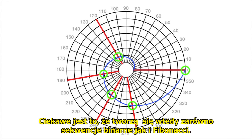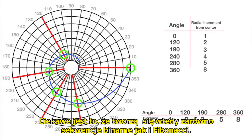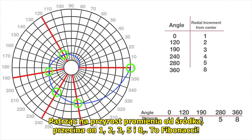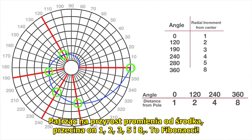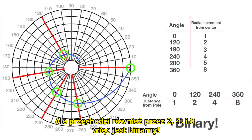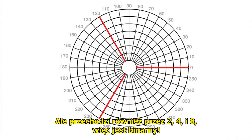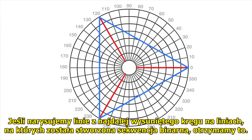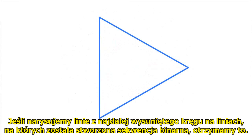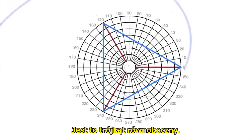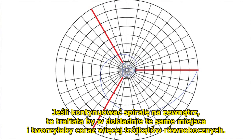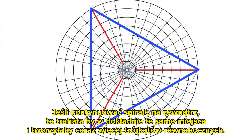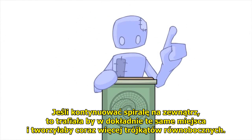What's interesting is that the golden mean spiral on the polar graph creates both a binary and a Fibonacci sequence. Looking at the radial increments from the center, it crosses at 1, 2, 3, 5, and 8 — that's Fibonacci. But it also crosses at 2, 4, and 8 — that's a binary sequence. If you draw lines from the outermost circles on the lines where the binary sequence was formed, you get an equilateral triangle. If you continue the spiral outward, it would continue to hit these exact same places and form larger equilateral triangles.